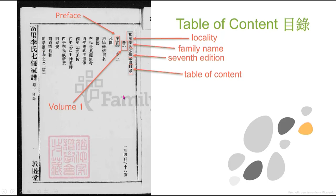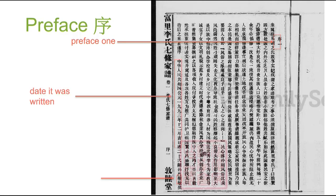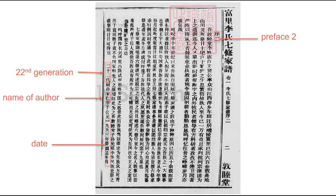Here is preface one. In this preface section we can get information such as the date it was written and the name of the author. Also in this Jiapu, this author mentioned wars and building a school by the community. There are two prefaces in this Jiapu. Here's the second one, where we can find information about the generation and place of the author — this author is from the 22nd generation — his name, and the day this preface was written. This author also mentioned the migration of the family and that it has been 50 years since they last updated this Jiapu, and this new edition is a collaborative effort of the clan members.